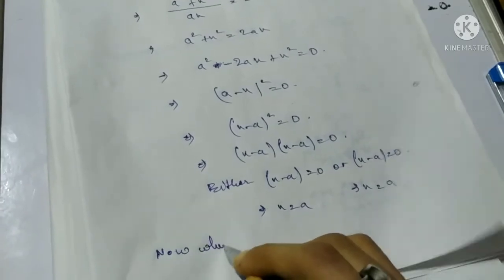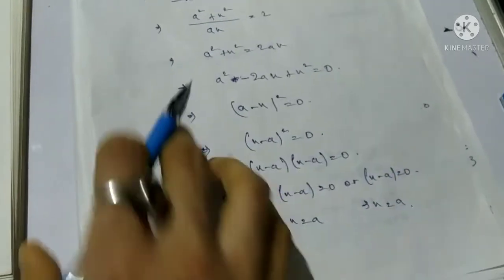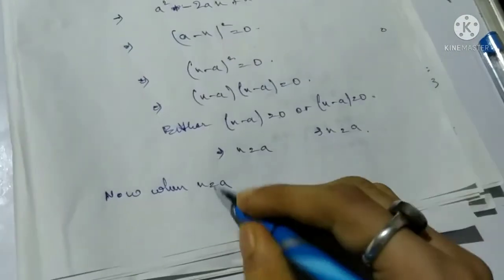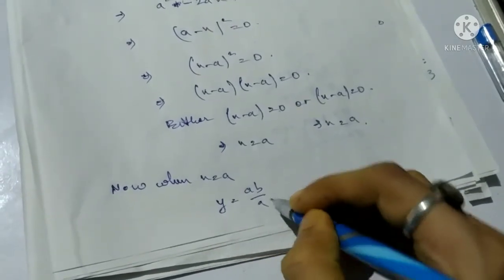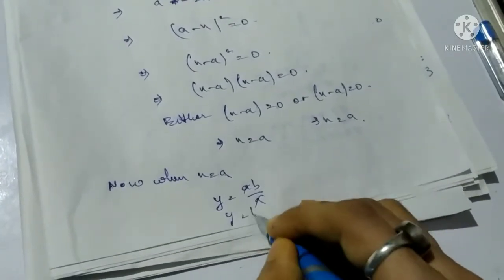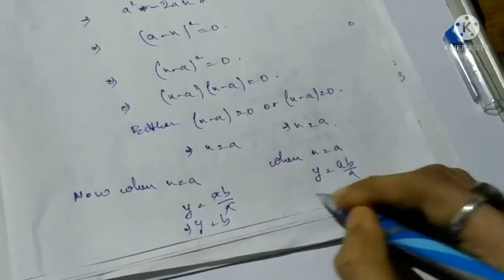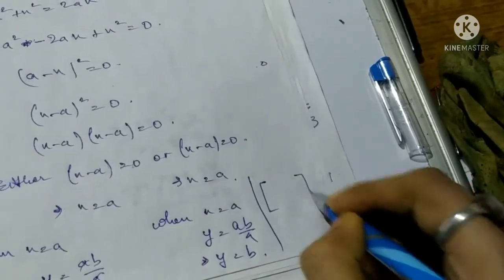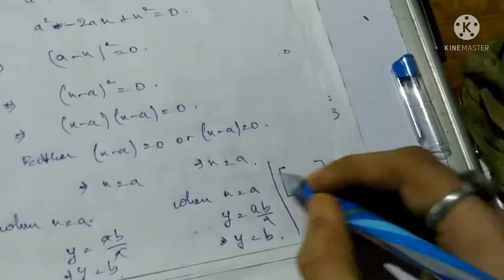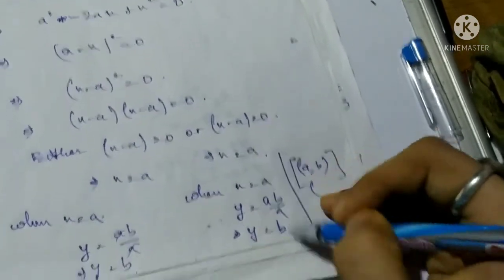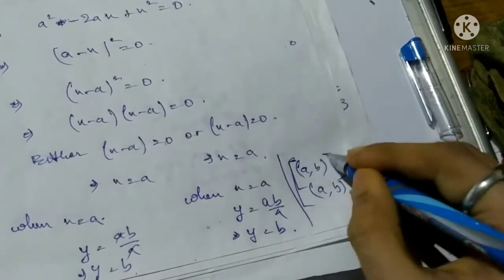When x equals a: y equals ab/a equals b. So x equals a and y equals b in both cases. Therefore the required solutions are (a, b) and (a, b).